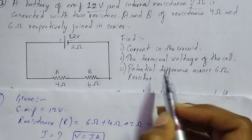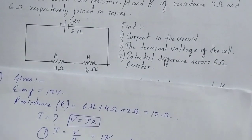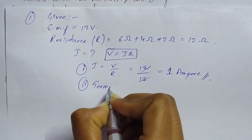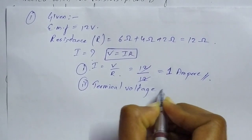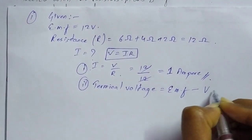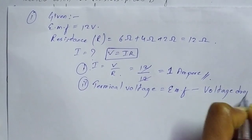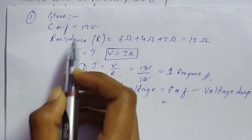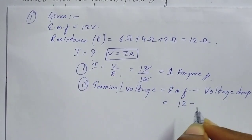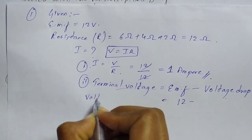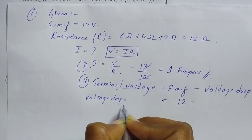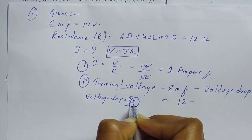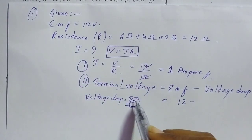Moving on to the second part: find the terminal voltage of the cell. The formula for terminal voltage is: terminal voltage = EMF minus voltage drop. EMF is 12 volt. Voltage drop is not directly given, so we find it using the formula: voltage drop = I × r, where I is the current and small r is the internal resistance — not to be confused with capital R, which is the total resistance.